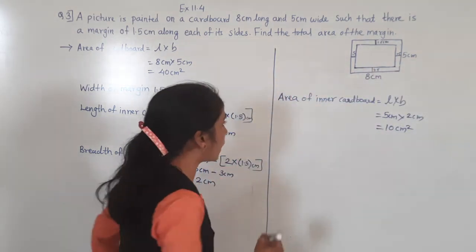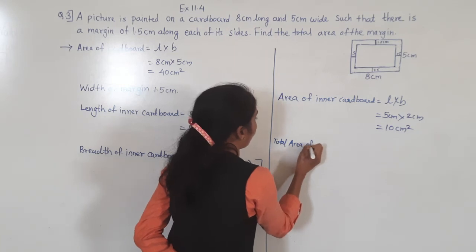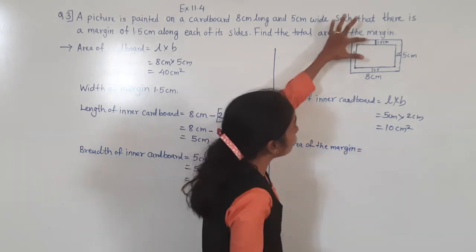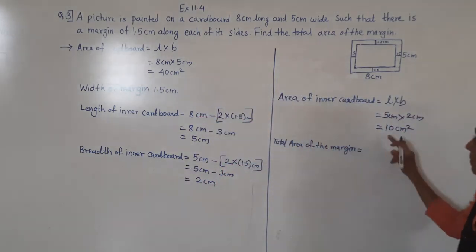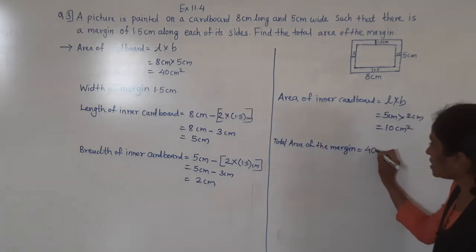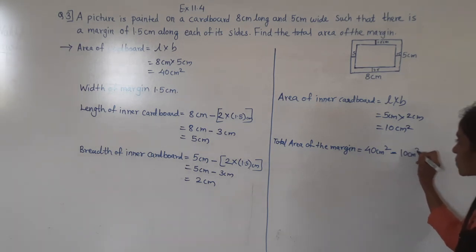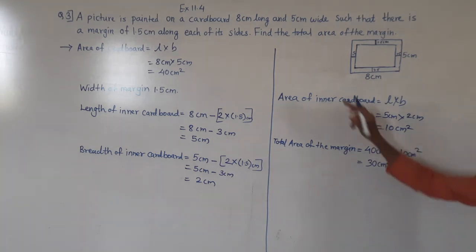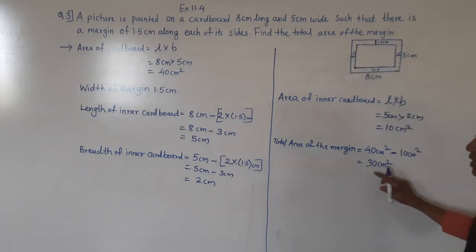Total area of the margin = area of cardboard minus area of inner cardboard = 40 cm square minus 10 cm square = 30 cm square. So the area of this margin is 30 cm square.